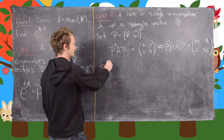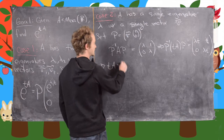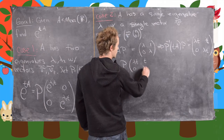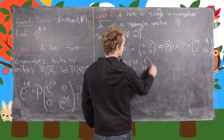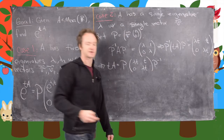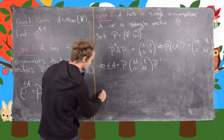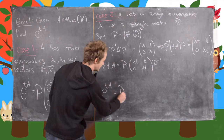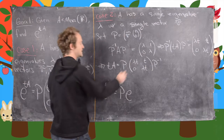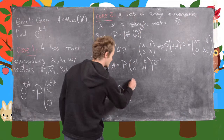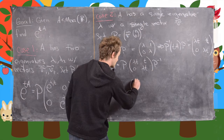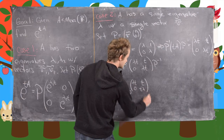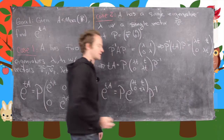That tells us that TA is equal to P times the matrix (lambda T, T, 0, lambda T) times P inverse. In other words, E to the TA is equal to P times E to this matrix: lambda T, T, 0, lambda T, times P inverse.